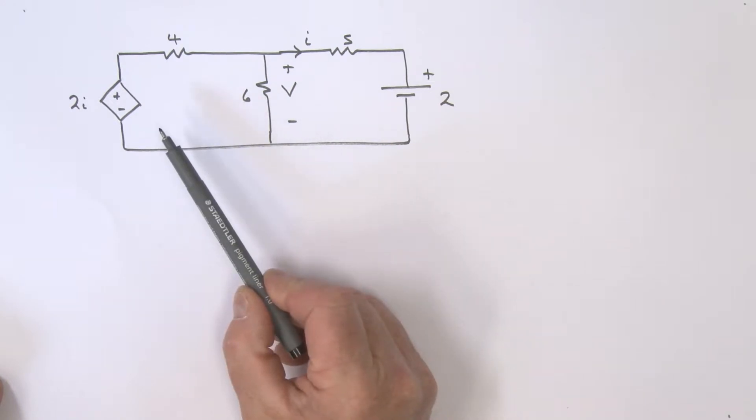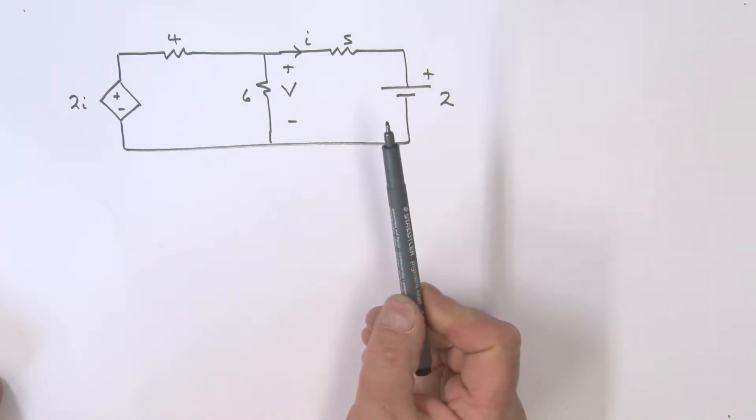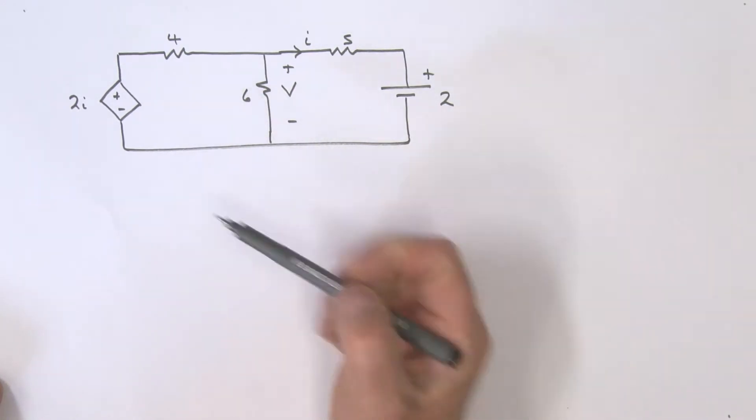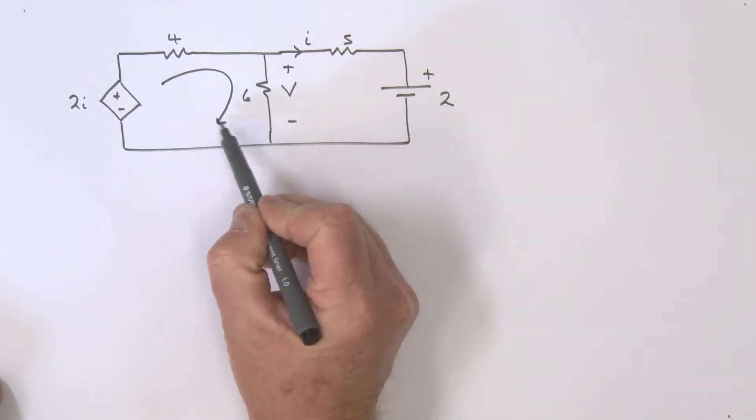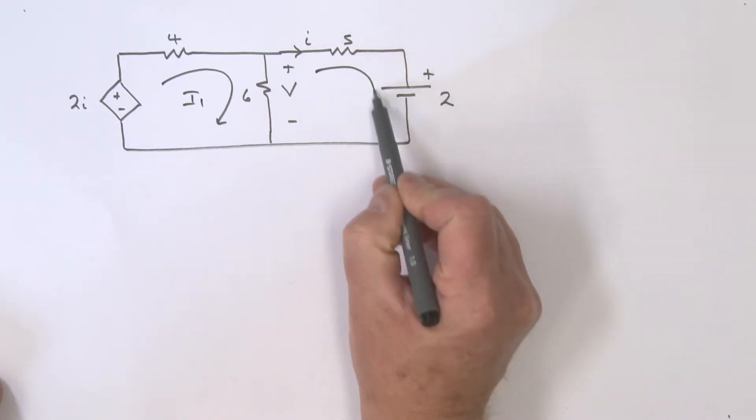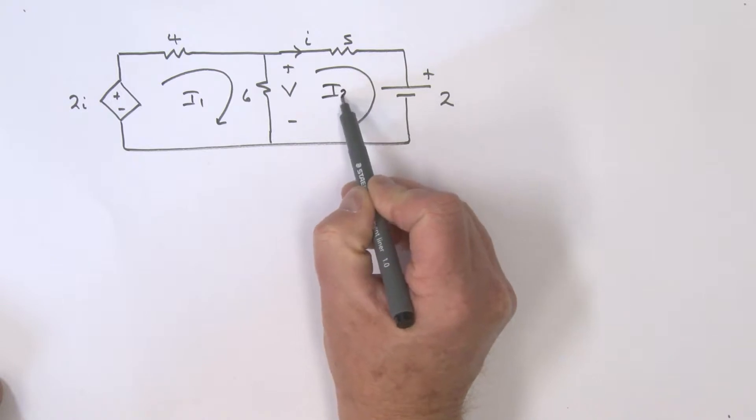Okay, I hope you've had a chance to actually have a look at this problem. So let's work it together. I'm going to define a mesh current here I1, another mesh current here I2.